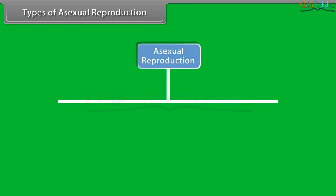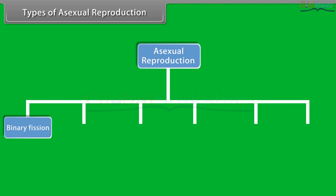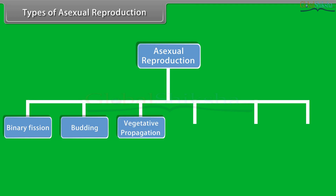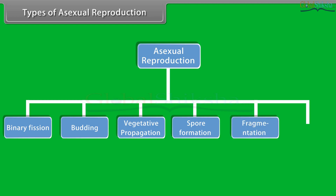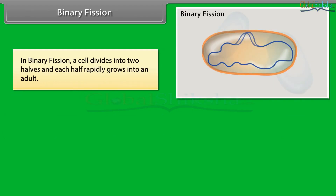Do you know how organisms reproduce asexually? An organism may reproduce asexually by binary fission, budding, vegetative propagation, spore formation, fragmentation, and parthenogenesis.